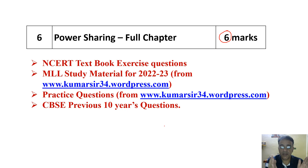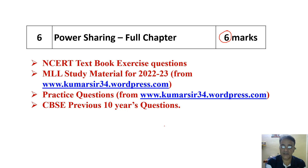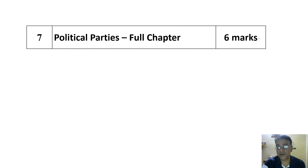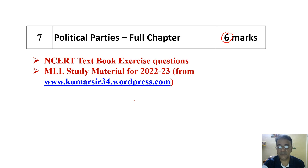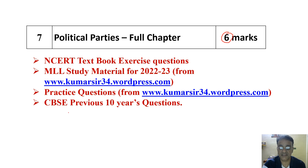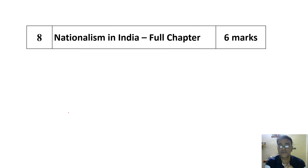Students have to complete these chapters in the minimum level study material. Once these chapters are uploaded, you can complete them properly. Next, Political Parties is worth six marks, and students have to complete the full textbook exercise questions, my minimum level learning study material, practice questions, and CBSE previous 10 years questions.